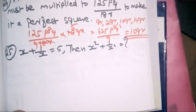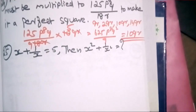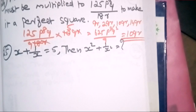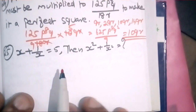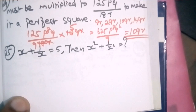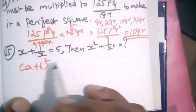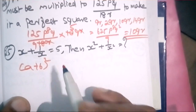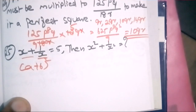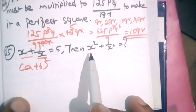Question number 25. This is a very important part of the question paper. If x plus 1 by x is equal to 5, then x squared plus 1 by x squared equals what? This is a plus b equals 5, then x squared plus 1 by x squared is equal to what.